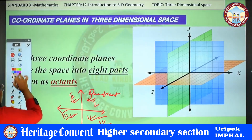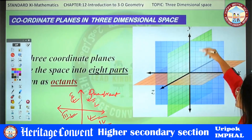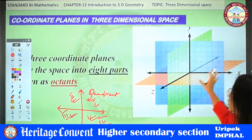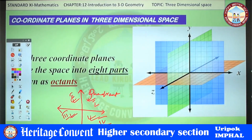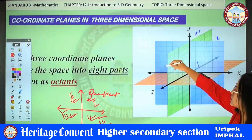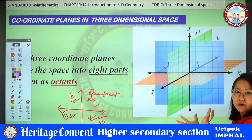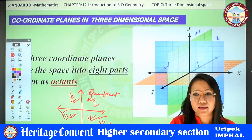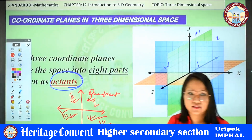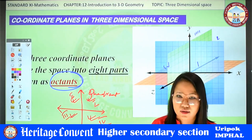Similarly, in three dimensions, we have three axes: X, Y, and Z. These define three planes: the XY-plane, YZ-plane, and XZ-plane. Together they divide space into eight equal parts, each called an octant. The first, second, third, fourth, fifth, sixth, seventh, and eighth octants. Each octant corresponds to a specific combination of positive and negative values of x, y, and z.